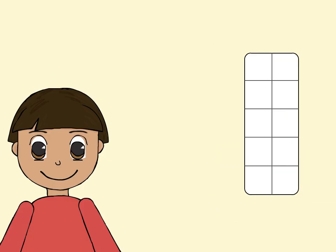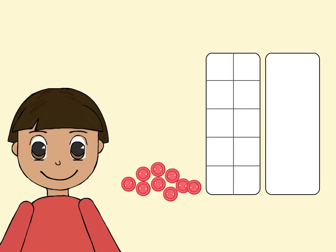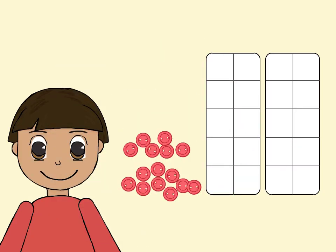Then clear the frame and repeat the activity with a different number of objects. When your child is ready to count more than 10 objects, draw a double 10-Frame. This provides enough spaces for your child to count up to 20 objects.